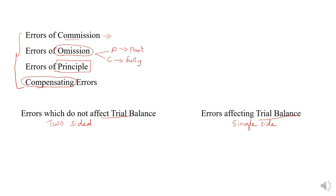In this video, I will be concentrating only on errors which do not affect the trial balance. Two-sided — as the name itself tells you — we record a dual aspect of every transaction. If both sides of the transaction are affected, it is called a two-sided error. How to deal with two-sided errors is what we will be discussing.